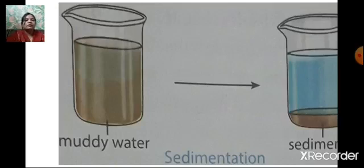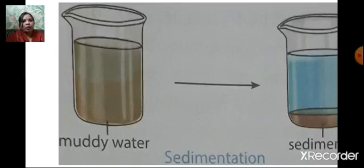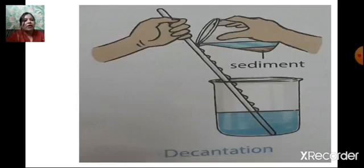This picture shows the process of sedimentation. On the left-hand side, you can see muddy water. On the right-hand side, the mud particles have settled down at the bottom of the container and the water on top is clear. This process is called sedimentation. Decantation means carefully removing the clear water from the sediment left behind at the bottom of the container.